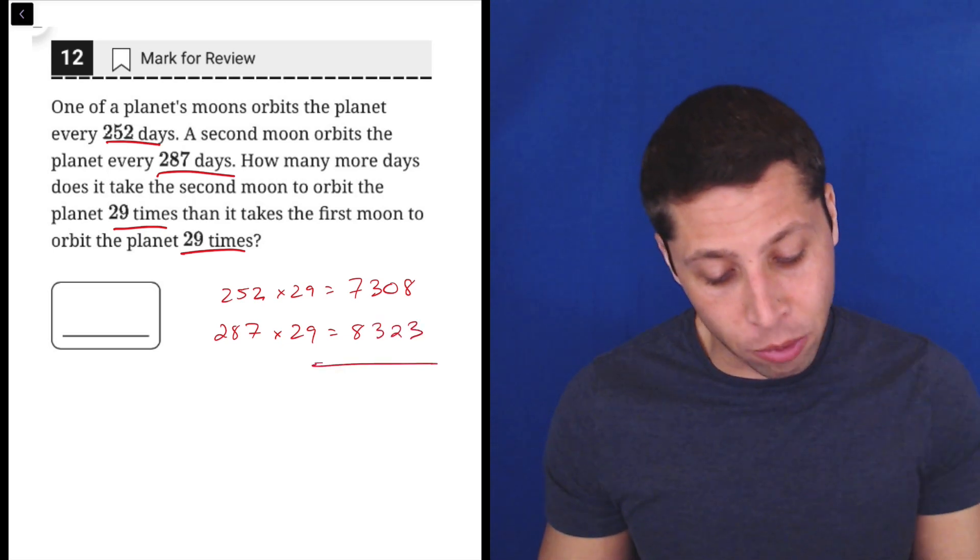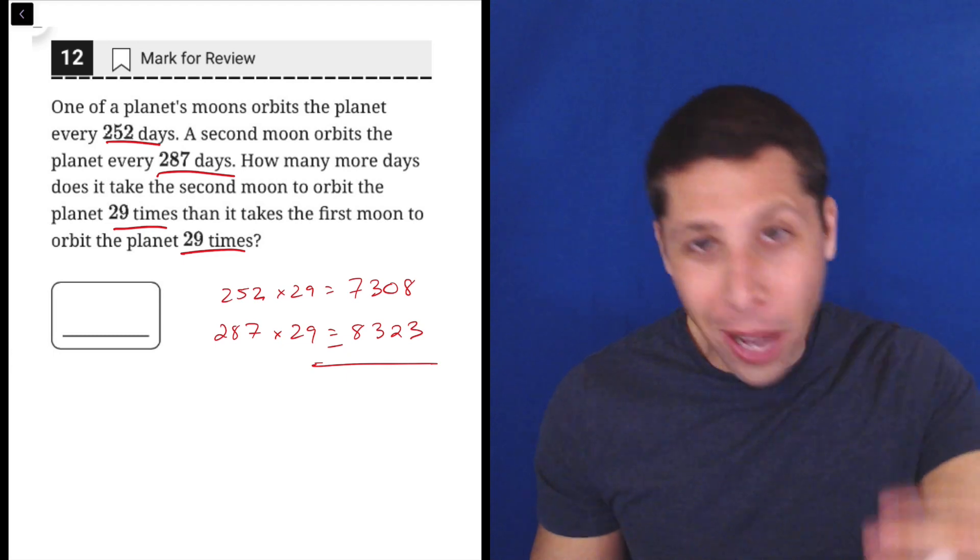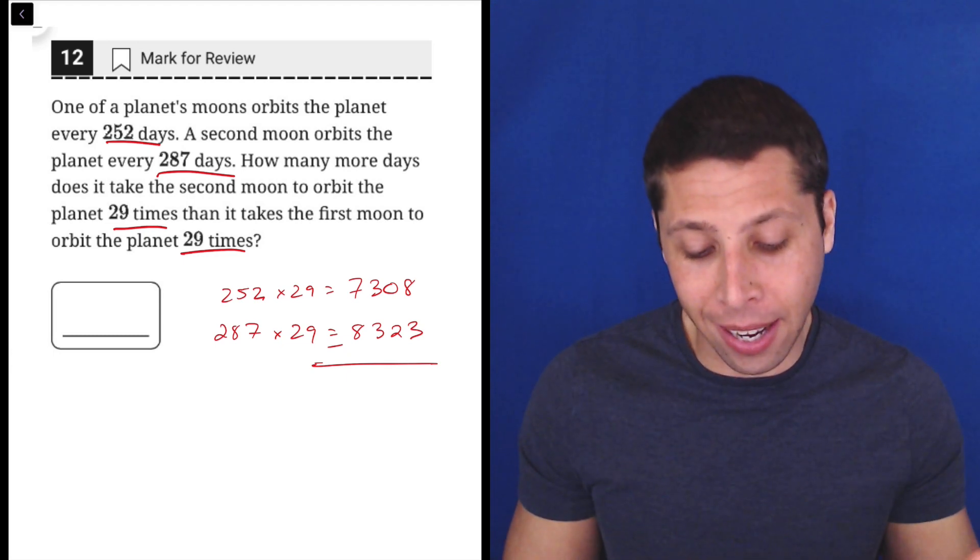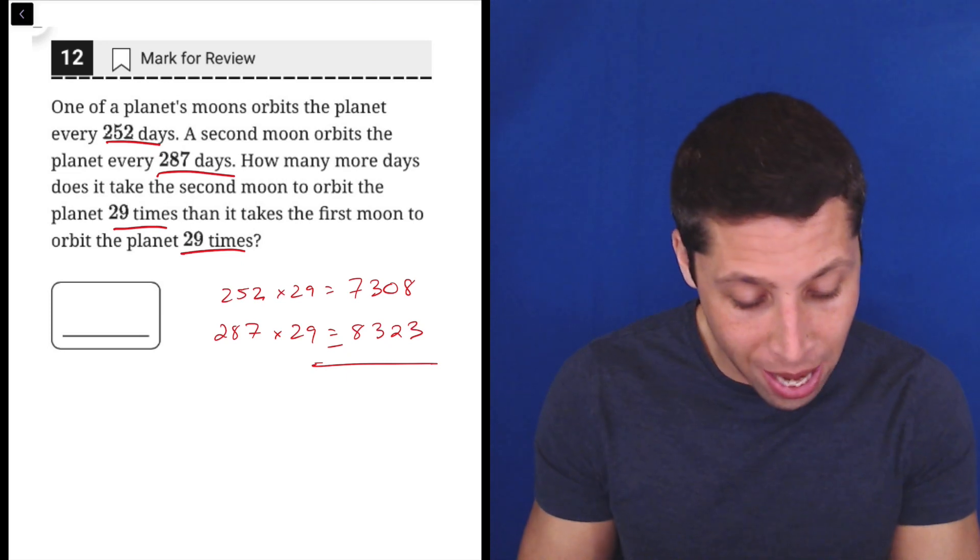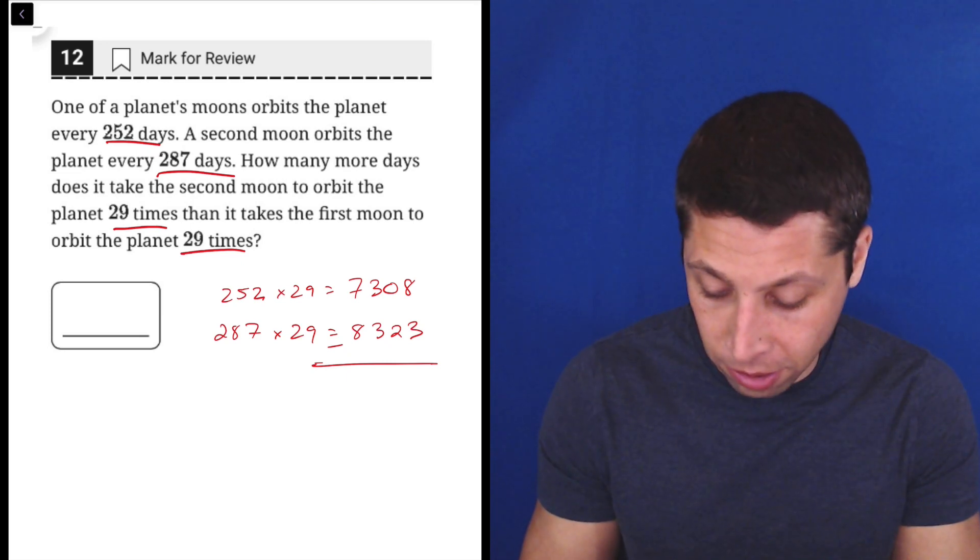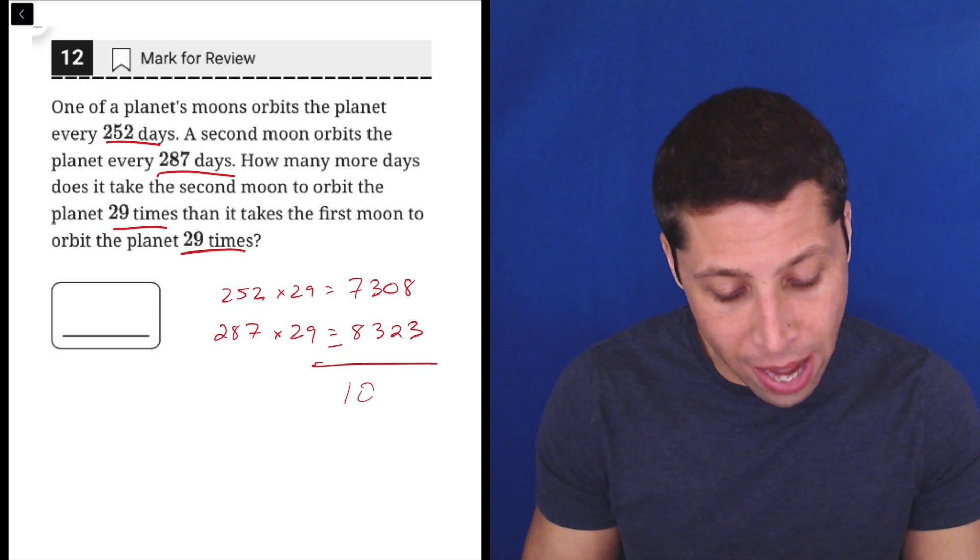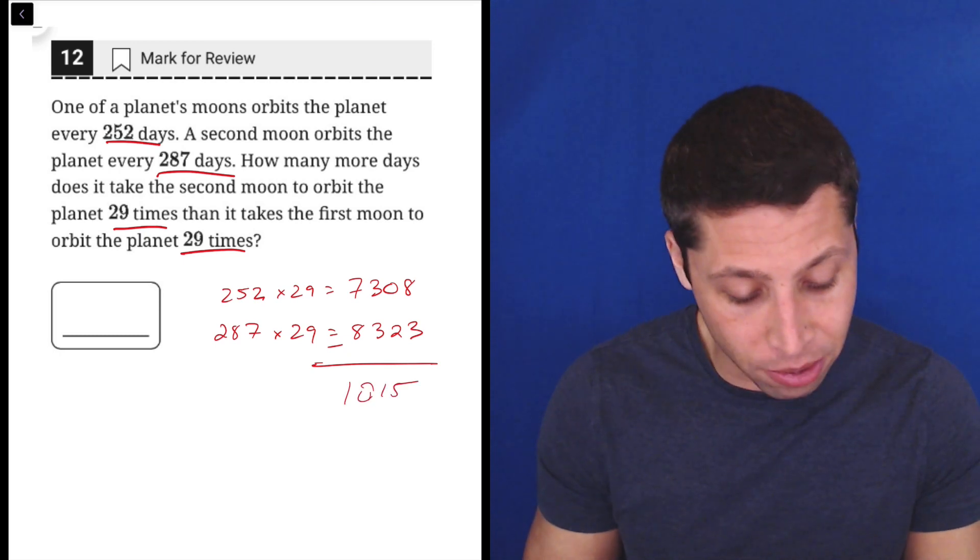What's the difference between these, right? We can subtract. Now I know the way it's set up it's going to give me a negative number, but I know it's not that negative answer they're looking for, so I'm fine with it. So 8,323 minus 7,308 is 1,015.